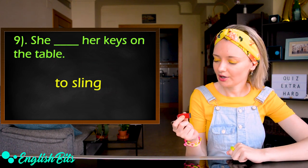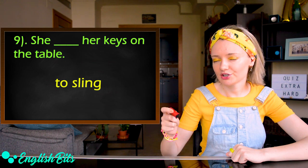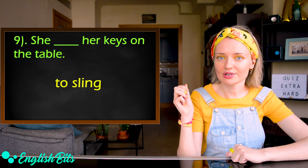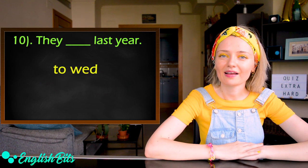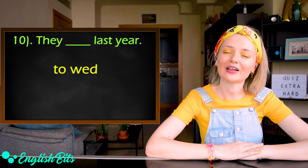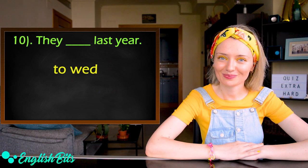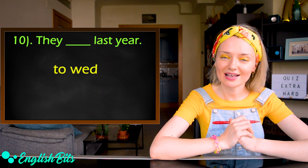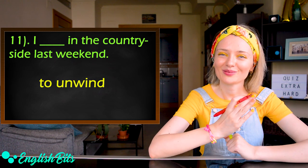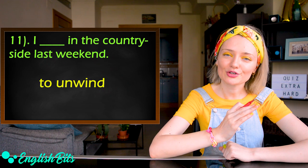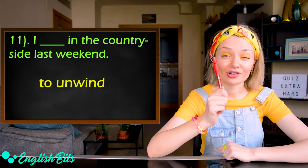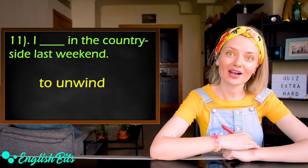Number nine: She [gap] her keys on the table. The verb is to sling. Number ten: They [gap] last year. The verb is to wed. And the last sentence — number eleven: I [gap] in the countryside last weekend. The verb you have to use is to unwind. Write down your last answer and now we're going to check if they are correct.